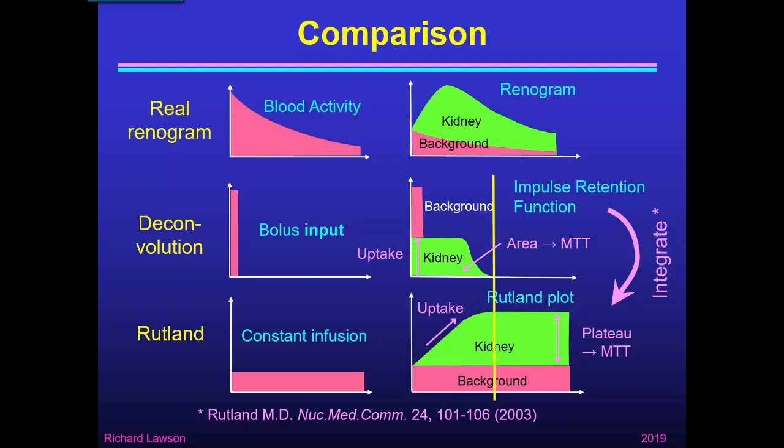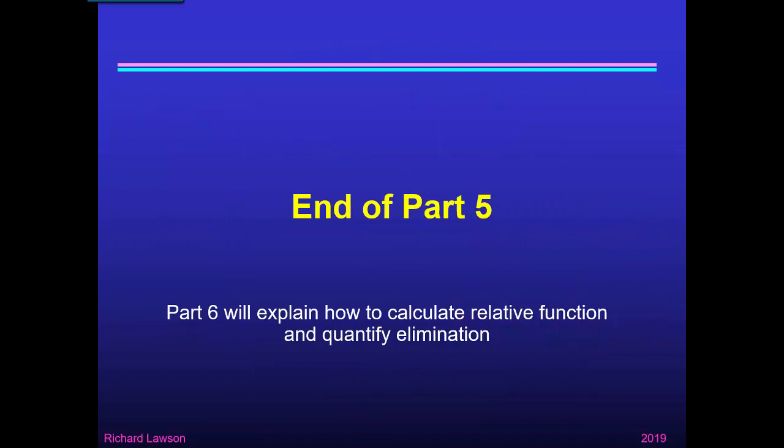That may be true under certain circumstances but not always — it's complicated by the fact that the horizontal axis of the impulse retention function is real time, whereas the horizontal axis of the Rutland plot is a stretched time, which I like to call Rutland time. But maybe we can calculate mean transit time from the Rutland plot, which would mean we wouldn't need deconvolution at all. That's the end of part 5. In part 6 I'll finish by explaining how we calculate relative function and how we quantify elimination.